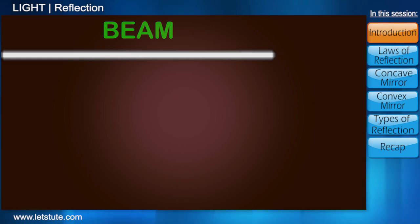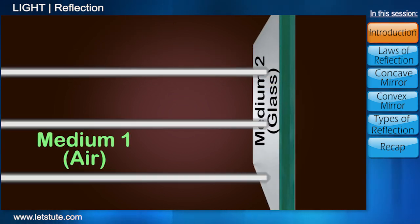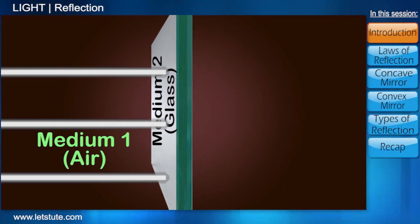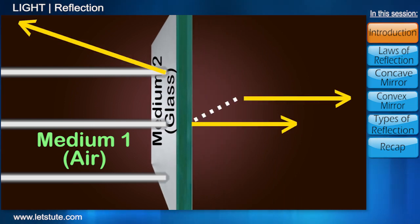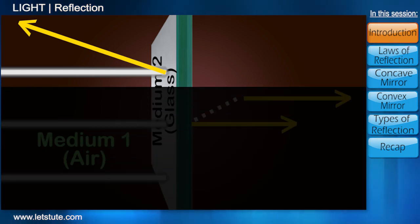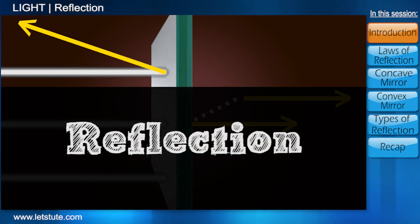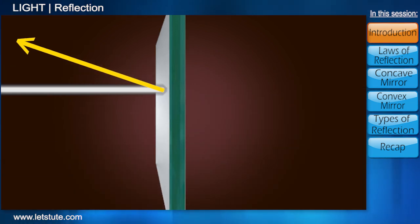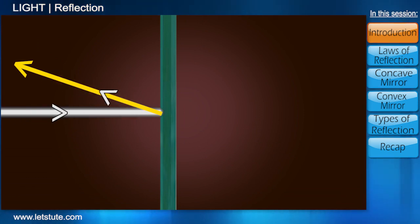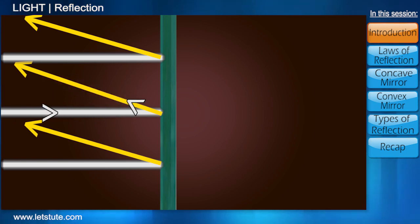When light encounters any other type of medium, like glass for instance, then depending upon the type of glass, it undergoes a few changes in its otherwise straight behavior. Leaving all other types of behaviors to be dealt with in upcoming sessions, for now we'll only concern ourselves with the bouncing back behavior of light — the behavior called reflection. When light passing through any medium bounces off any surface or object back into the same medium, the behavior is called reflection.